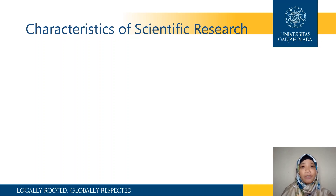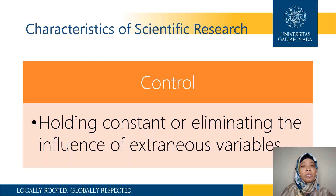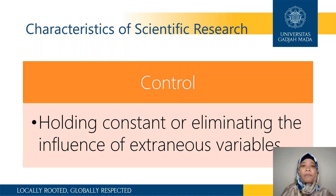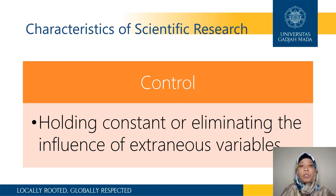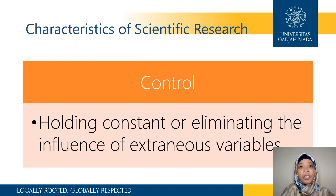There are at least three characteristics of scientific research. The first one is the element of control — this is when we're holding constant or trying to eliminate the influence of extraneous variables. Extraneous variables are other variables besides the independent and dependent variables, but they might affect the relationship between them. We try to control them using statistical methods or, in experimental research, we try to eliminate as many as possible to make our research cleaner.